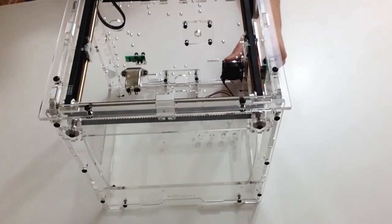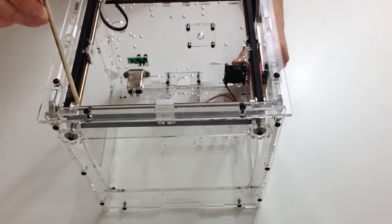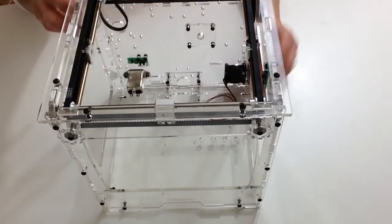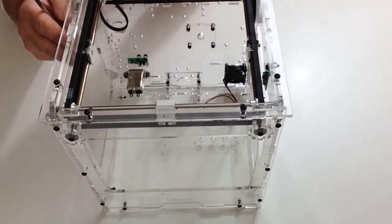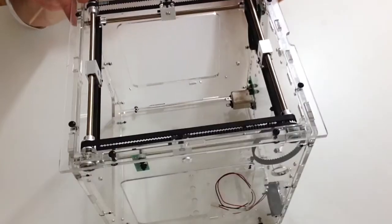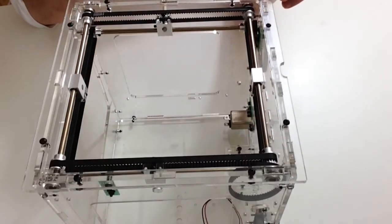You need to loosen the screws to the pulleys on these three positions here. Once you've done that, position the assembly so it's facing you—you should have a hole on one side here.